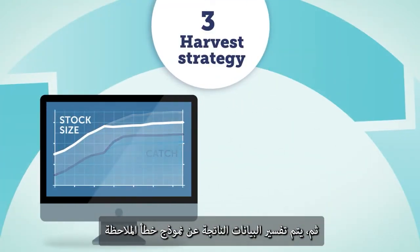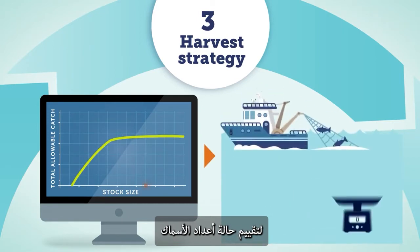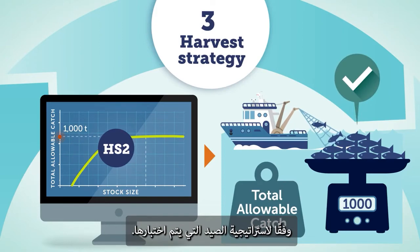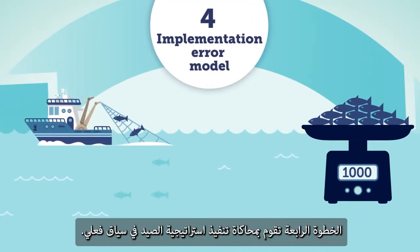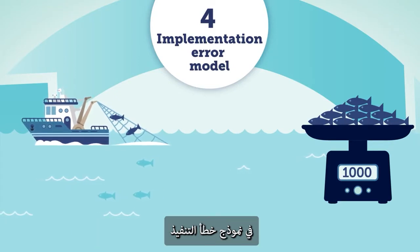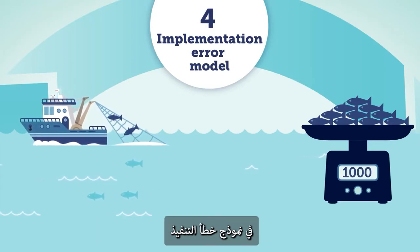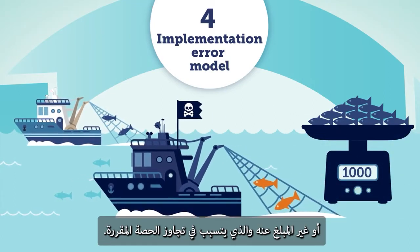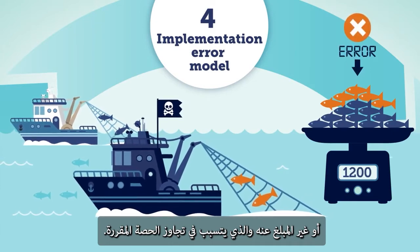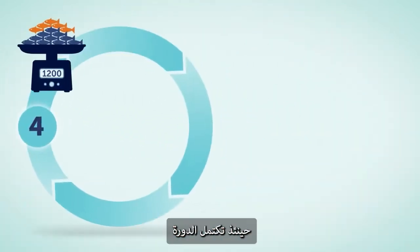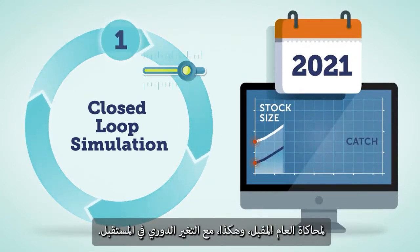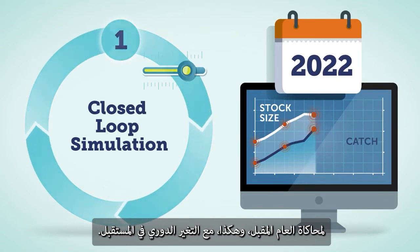Then, the data coming out of the observation error model are interpreted to assess the population status and determine the management response based on the harvest strategy being tested. The fourth step simulates on-the-water implementation of the harvest strategy. In this so-called implementation error model, additional bias is added — for example, due to potential illegal or unreported catches that cause the quota to be exceeded. The cycle then completes, with the data feeding back into the operating model to simulate the next year and so on, cycling into the future.